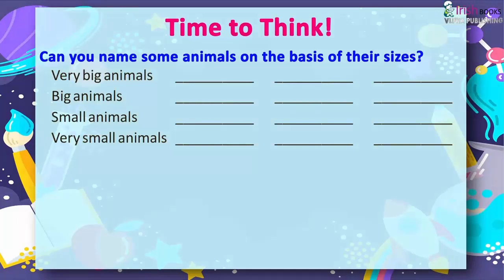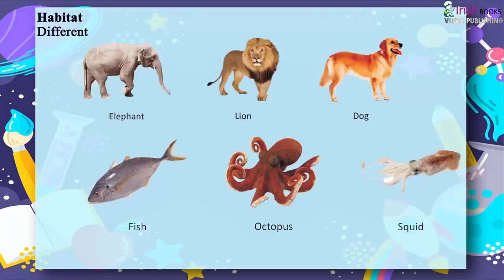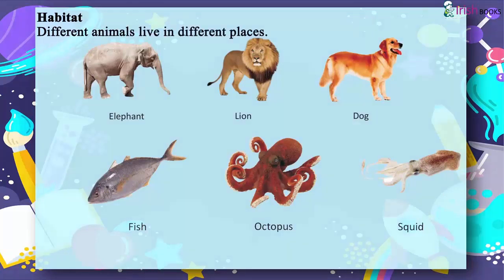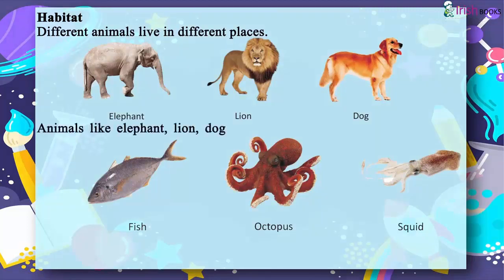Habitat. Different animals live in different places. Animals like elephant, lion, and dog live on land.